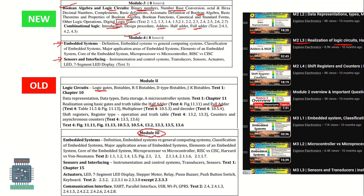That covers Module 3. Looking at Module 4, it is Embedded Systems and Sensors - which was Module 3 in the previous syllabus. In the new syllabus it becomes Module 4: Embedded Systems, Sensors, and Interfacing. In the old syllabus Module 3 also included actuators and communication interface, but those are now removed. Module 4 covers embedded systems, microcontroller systems, microprocessor versus microcontroller, and sensors and interfacing. Note that existing playlist content is labeled as Module 3, so refer to that for Module 4.